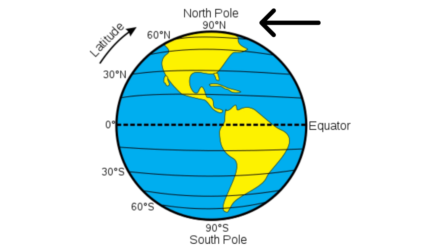The upper part of the Earth is known as the North Pole — the latitude of the North Pole is 90 degrees north. The bottom part of the Earth is called the South Pole — its latitude is 90 degrees south.